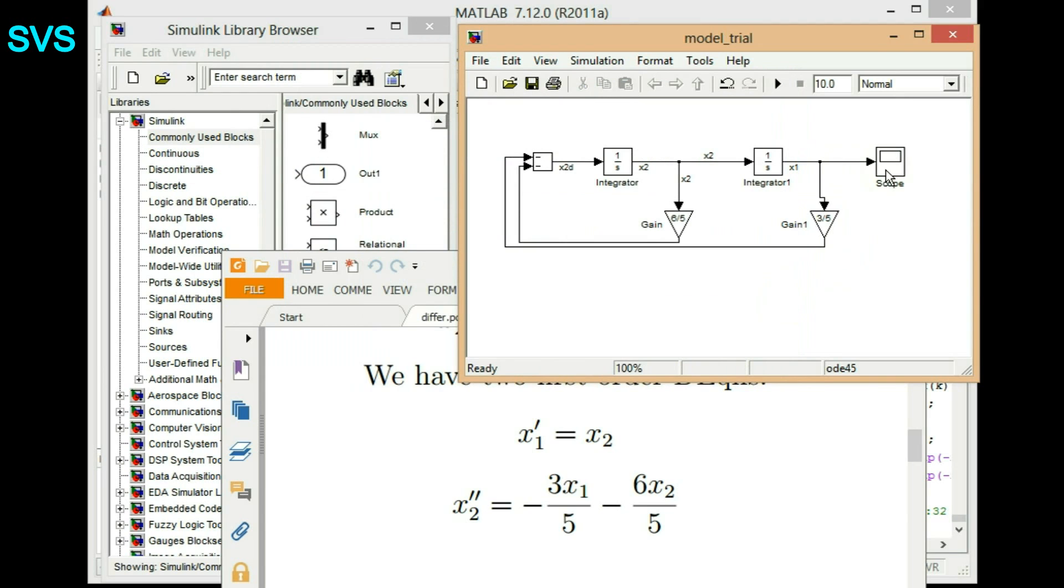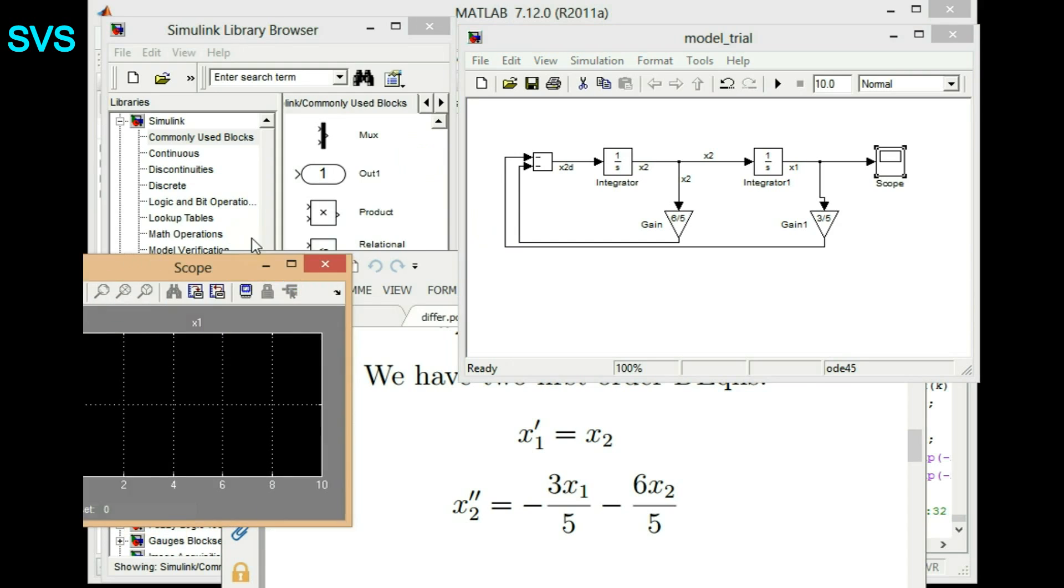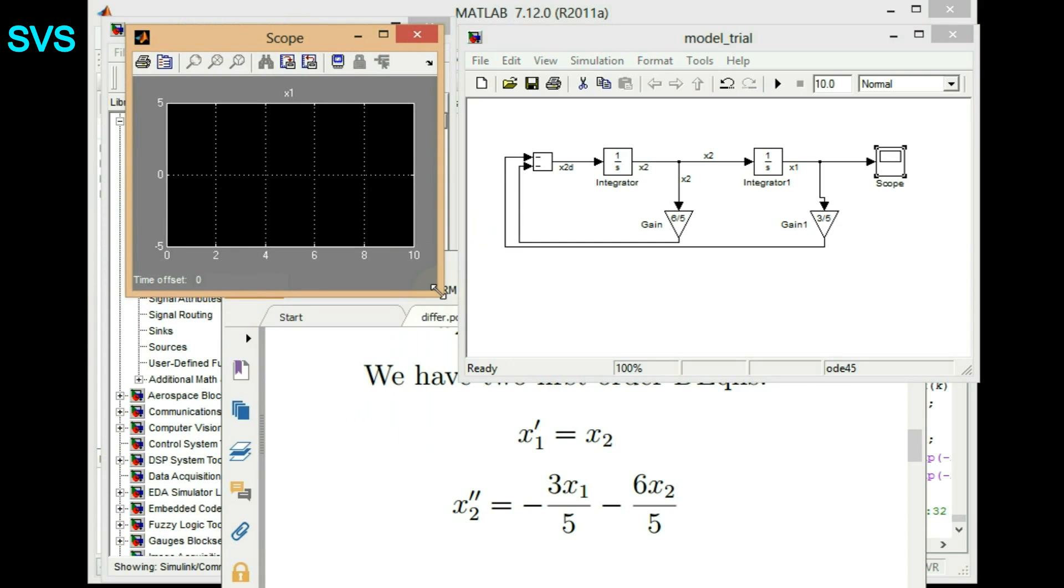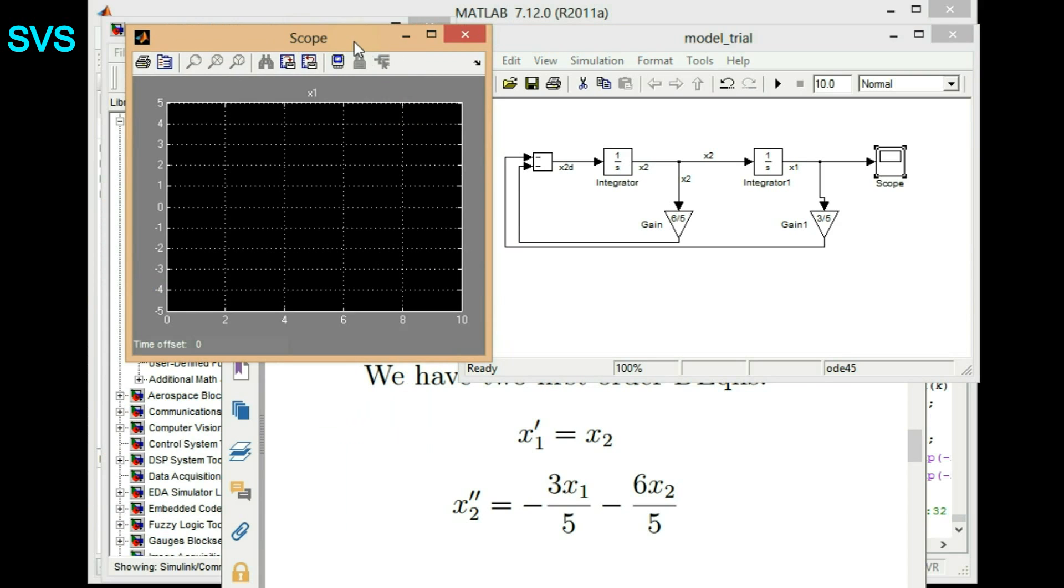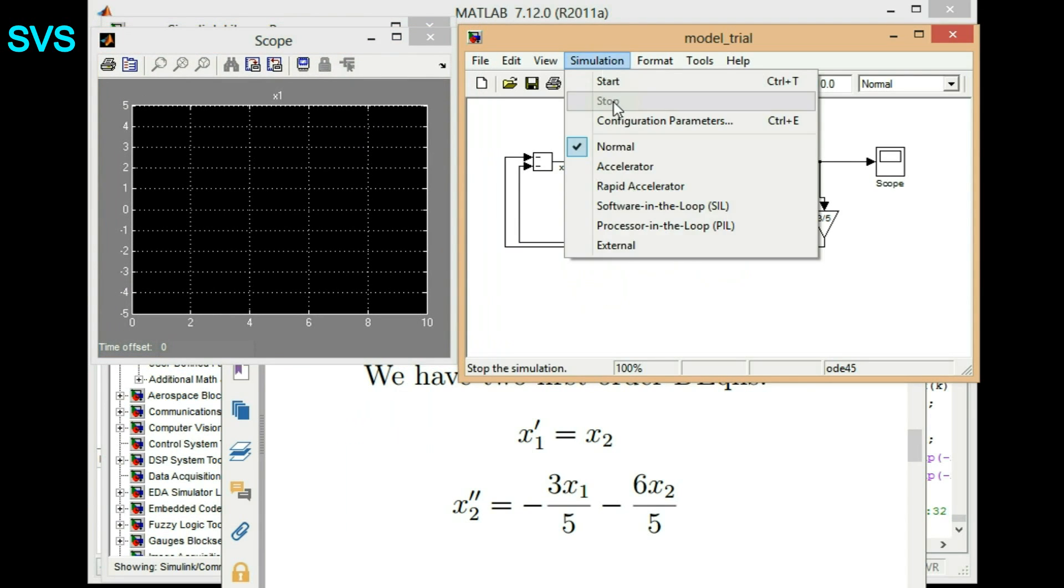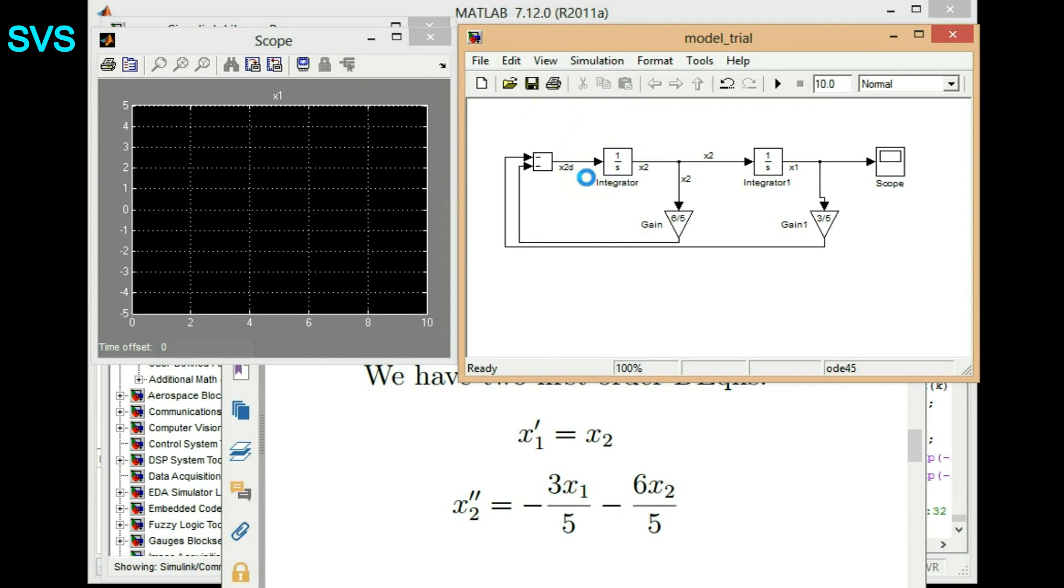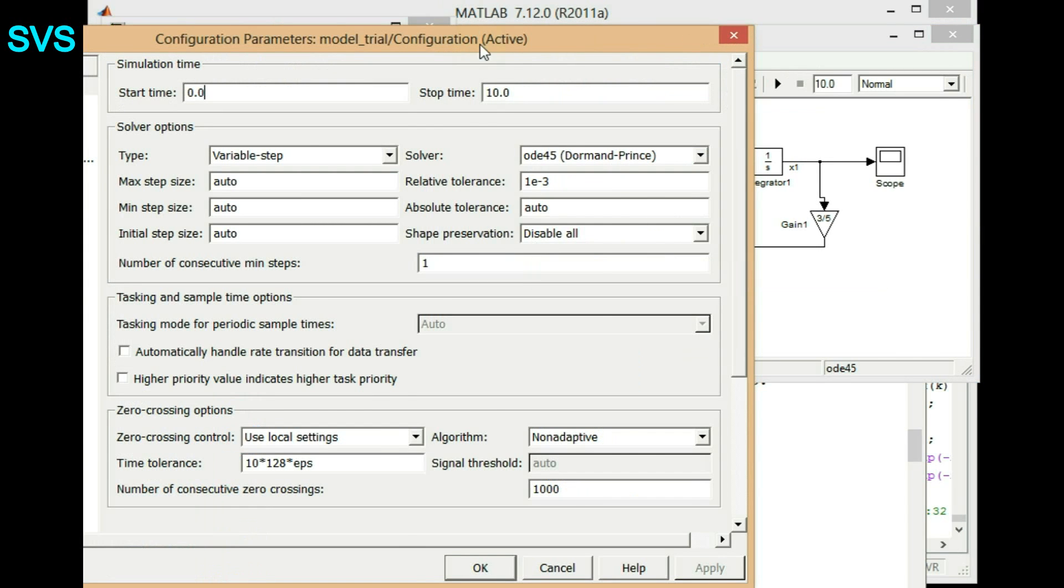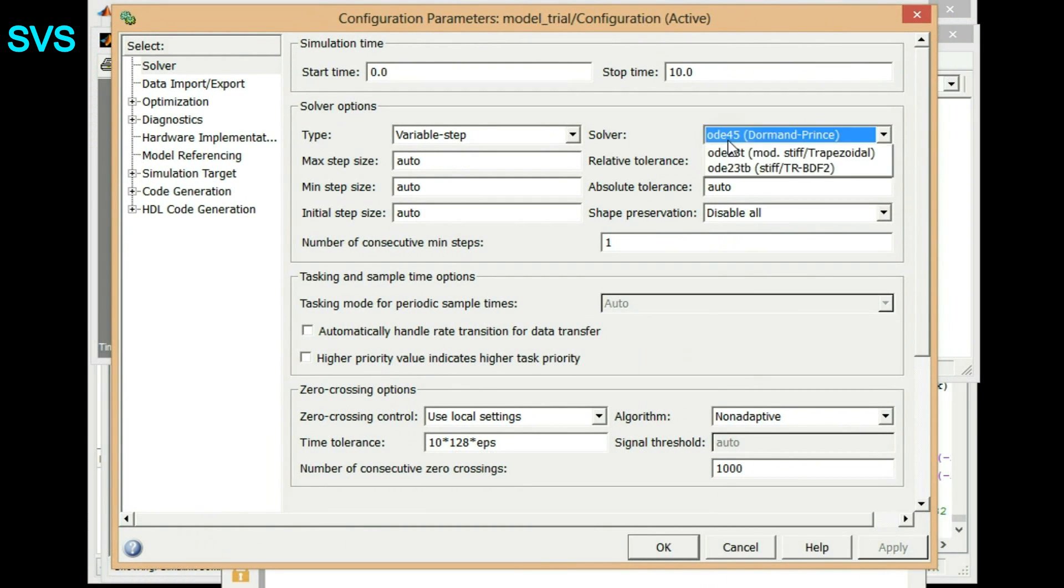So we are assuming 0 initial conditions. So if we see the differential equation, it is simple. So if we put dx by dt as 0 so we have answer like both states tend to 0. So finally if we run it we'll have steady state value as 0 because this differential equation has that steady state value as 0. So let's configure the parameters.